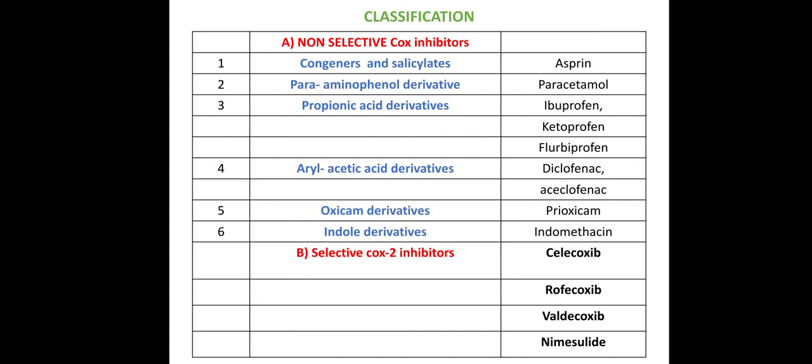The non-selective type includes: first, salicylates — aspirin, which is a very common drug; second, para-aminophenol derivatives — paracetamol, also a very common drug; third, propionic acid derivatives — ibuprofen, ketoprofen, and flurbiprofen; fourth, arylacetic acid derivatives — diclofenac and aceclofenac; fifth, oxicam derivatives — piroxicam; and sixth, indole derivatives — indomethacin.